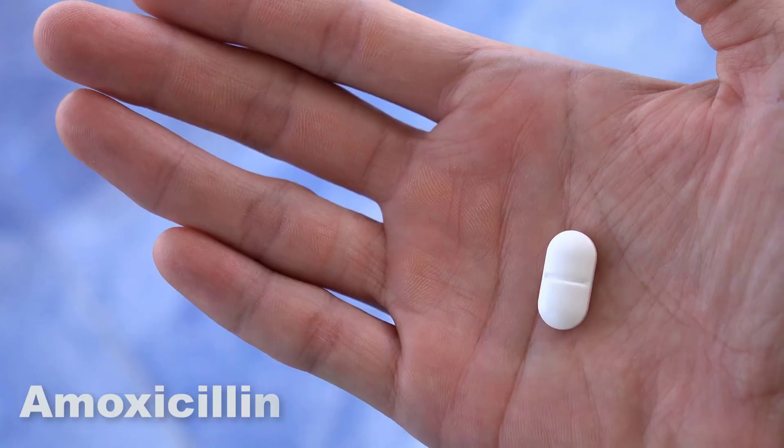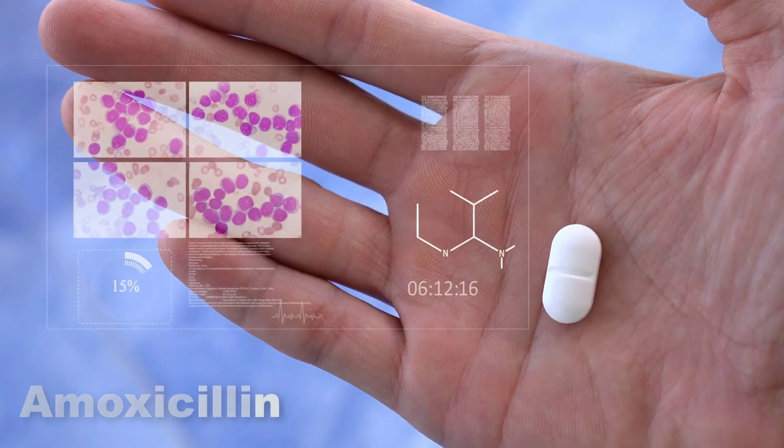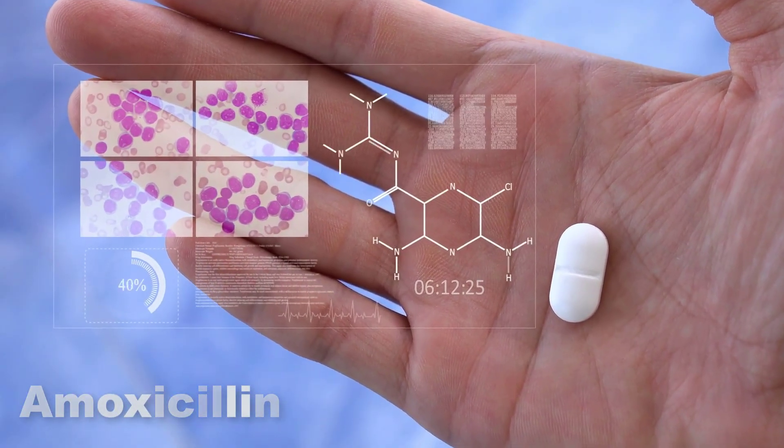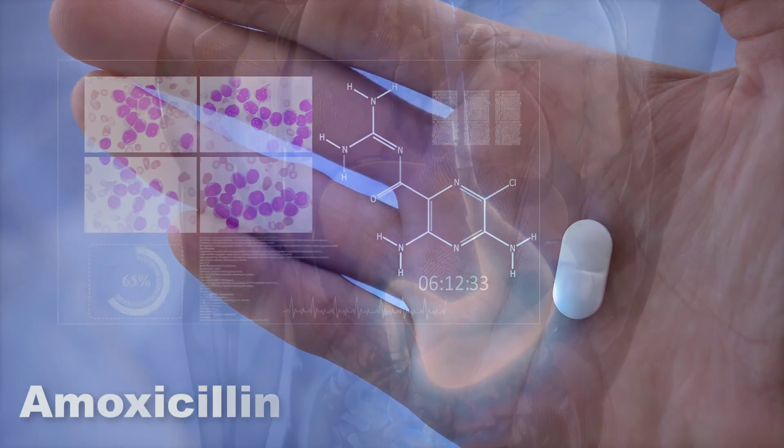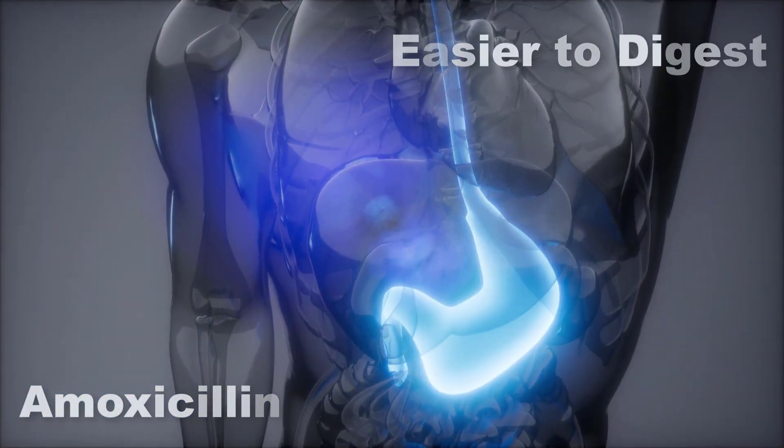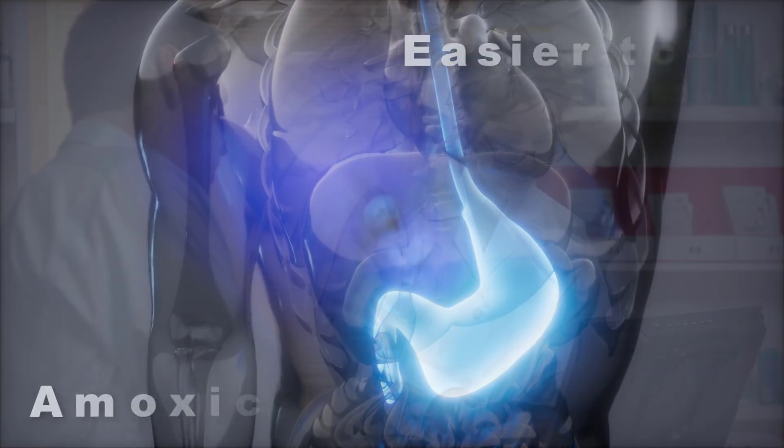Amoxicillin is a derivative of the antibiotic penicillin. It inhibits a different range of bacteria than penicillin does and amoxicillin is often absorbed better in the stomachs of patients than penicillin.